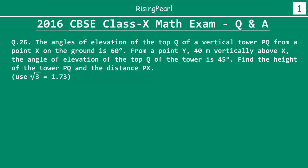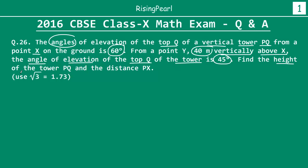The question states: the angles of elevation of the top Q of a vertical tower PQ — so Q is the top and P is the bottom — from a point X on the ground is 60 degrees. From a point Y, which is 40 meters vertically above X, the angle of elevation of the top Q of the tower is 45 degrees. Find the height of the tower PQ and the distance PX.